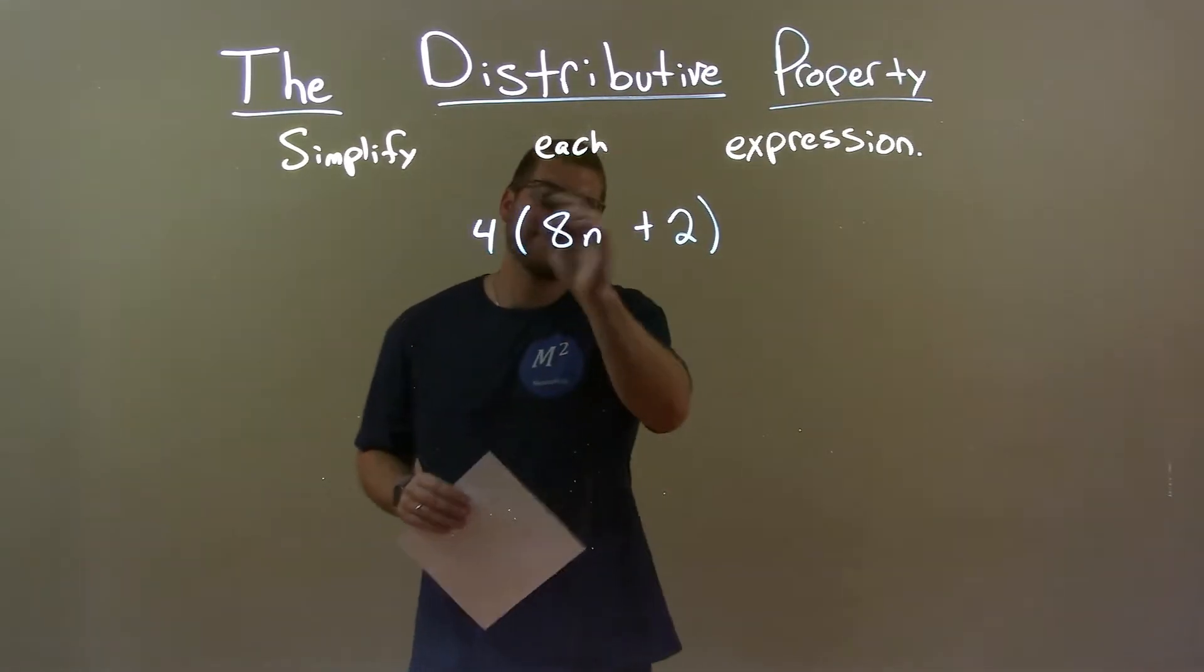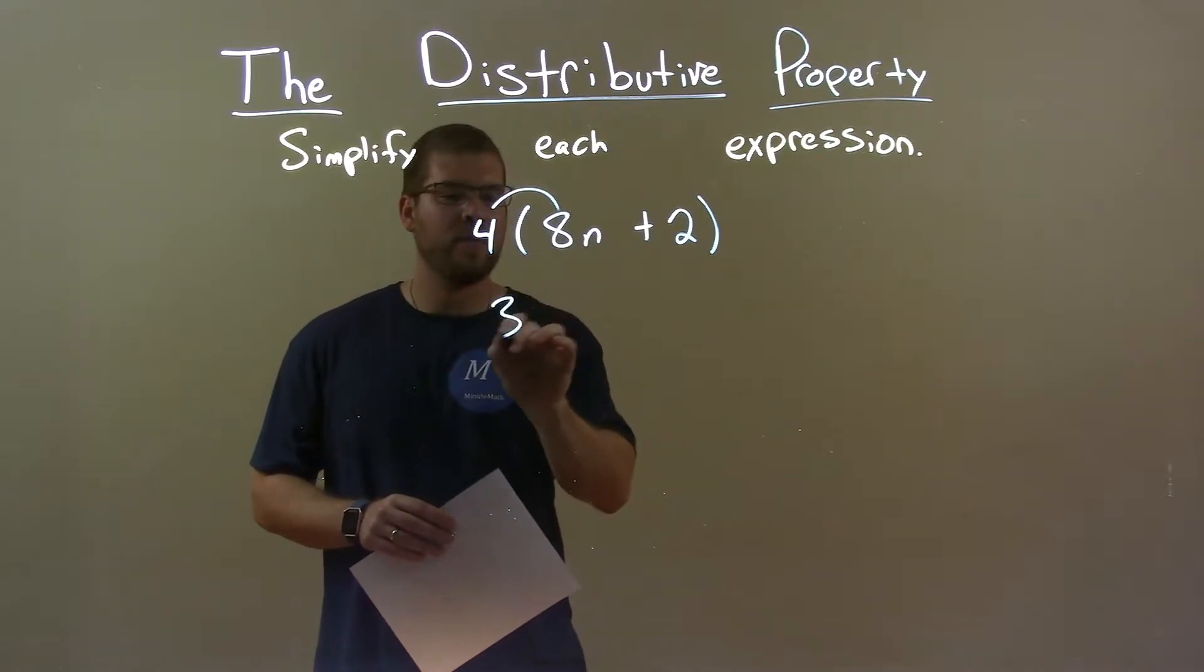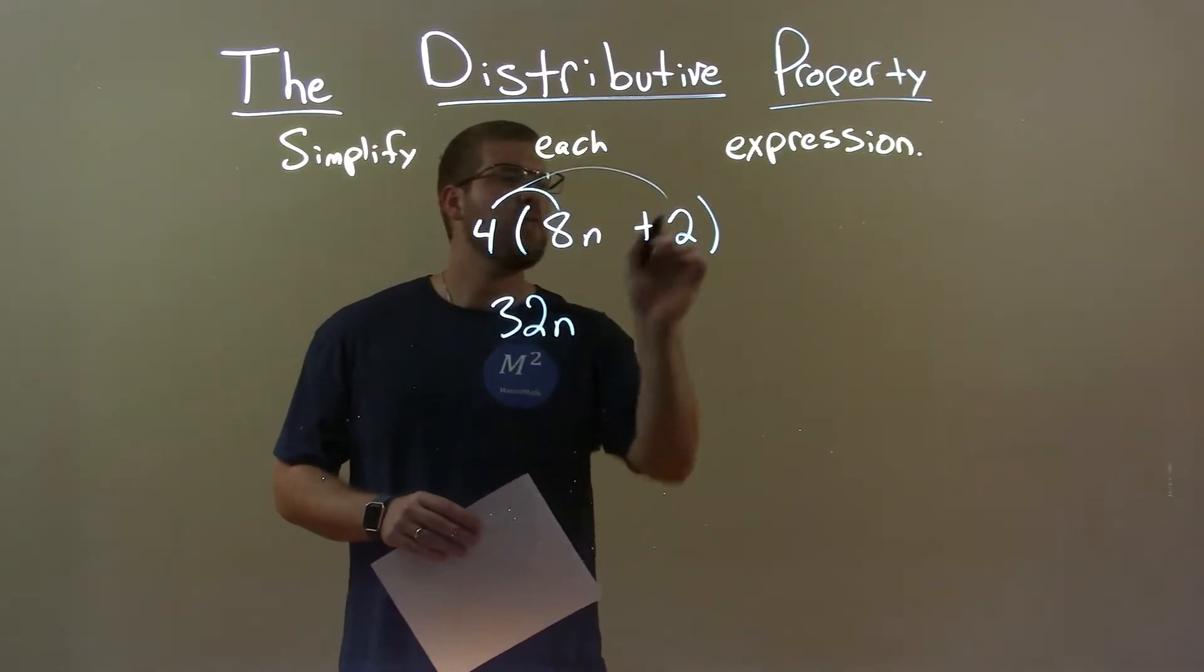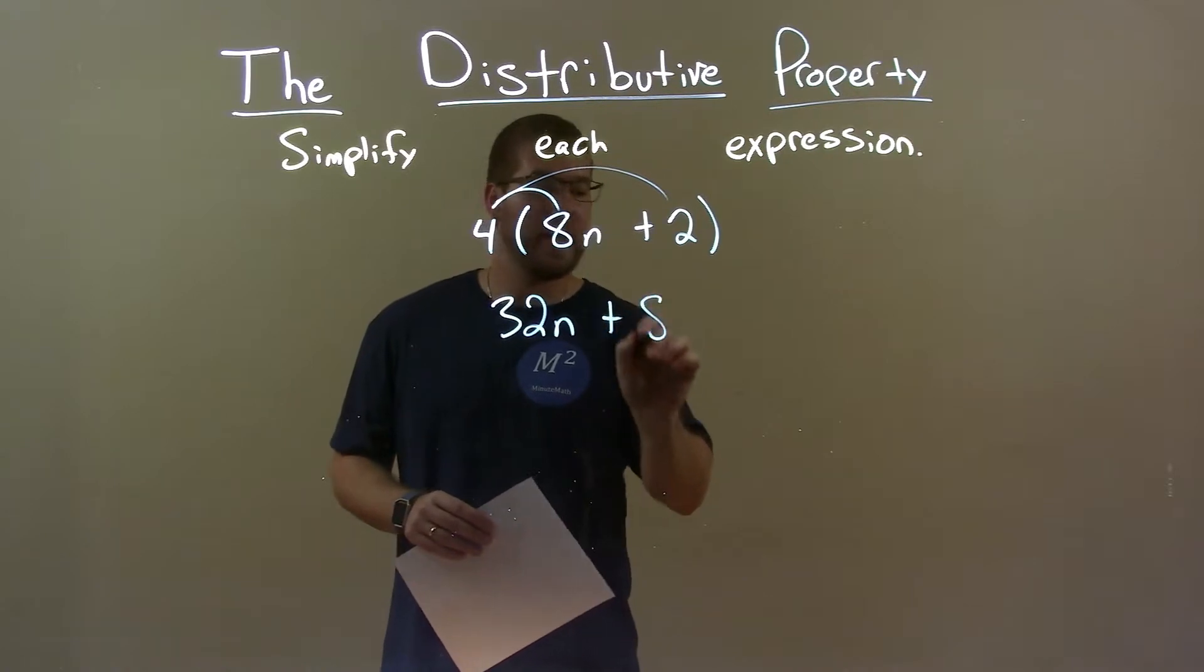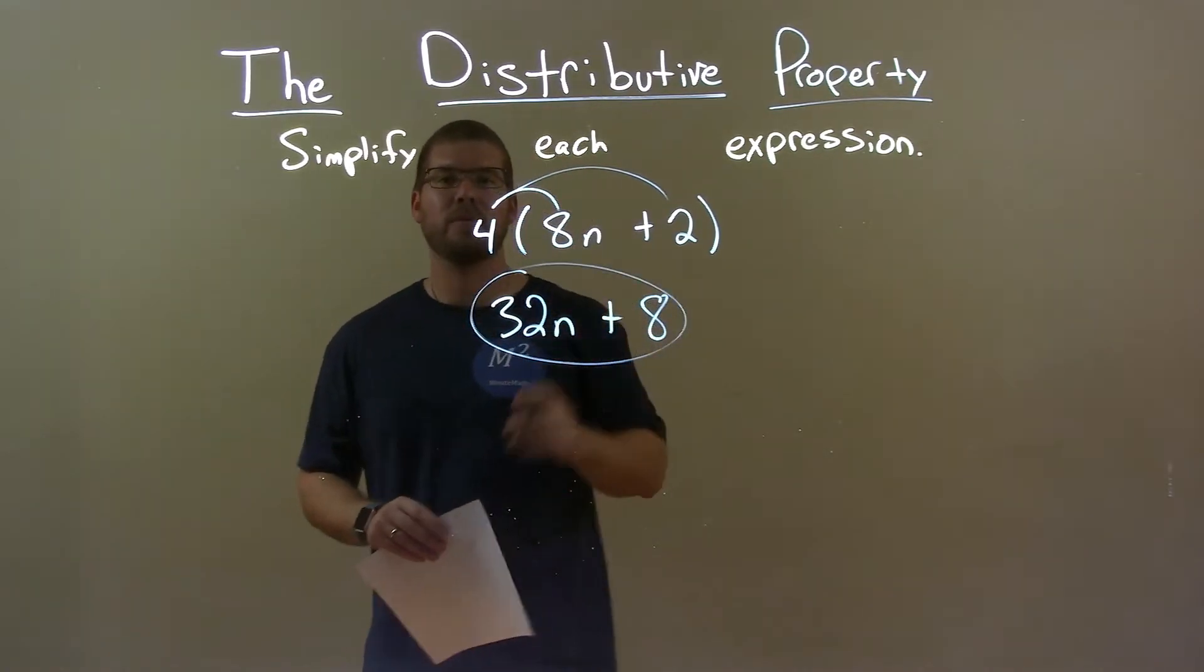So then from there, I need to distribute the 4 to both parts. Well, 4 times 8n is 32n, and 4 times 2 is 8. And so my final answer is 32n plus 8.